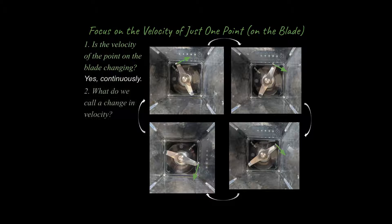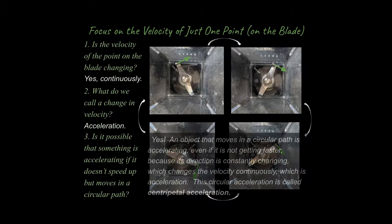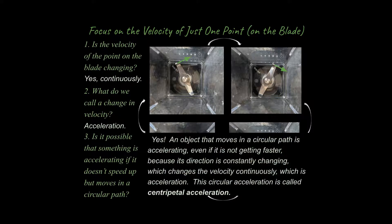The next logical question is: what do we call a change in velocity over a certain amount of time? That would be acceleration. And finally, is it possible that something is accelerating if it doesn't speed up but moves in a circular path? The answer is yes. Even if it's not speeding up or slowing down, if its velocity is constantly changing, that is a form of acceleration.